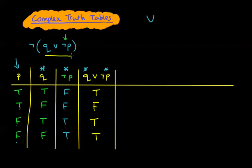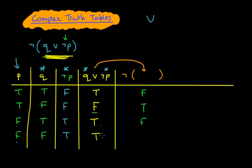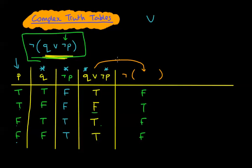We've worked out the inside of the bracket. Now we want the negation of that column for the final answer. The last column is just the opposite of the bracket column. True becomes false, false becomes true, true becomes false, true becomes false. So the final truth values are false, true, false, false.